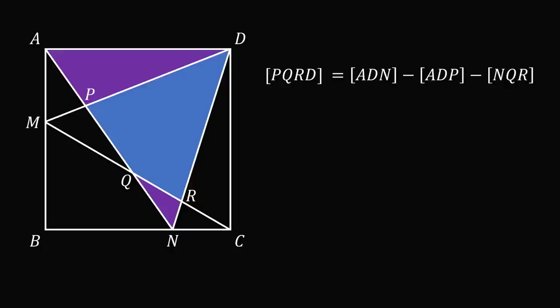So now let's calculate the area of triangle ADN. Its area is equal to AD multiplied by its height AB all over 2. But AD times AB is equal to the area of the square ABCD, so this is equal to the area of ABCD all over 2.